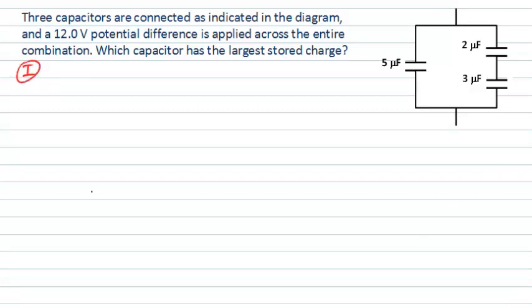It should be clear that the question has given us some capacitors connected in a particular way and is asking about the stored charge on these capacitors. In particular, which one has the largest charge stored on it when 12 volts is applied across the entire combination.